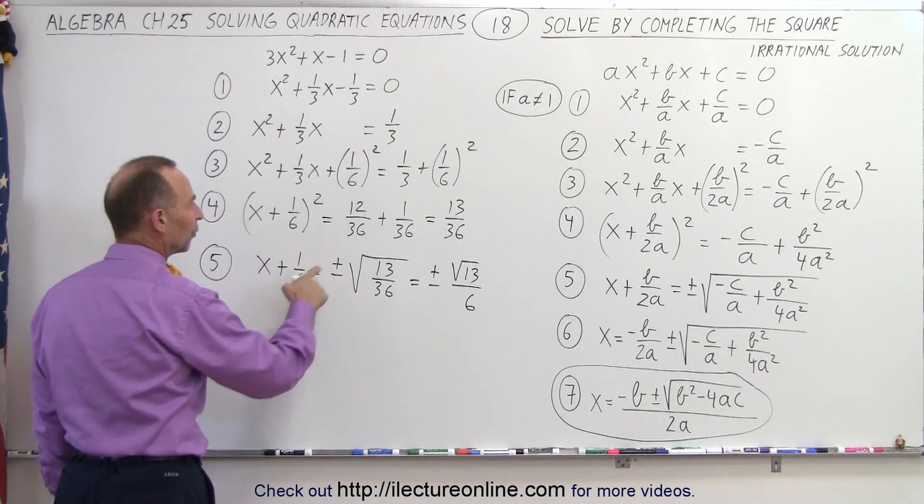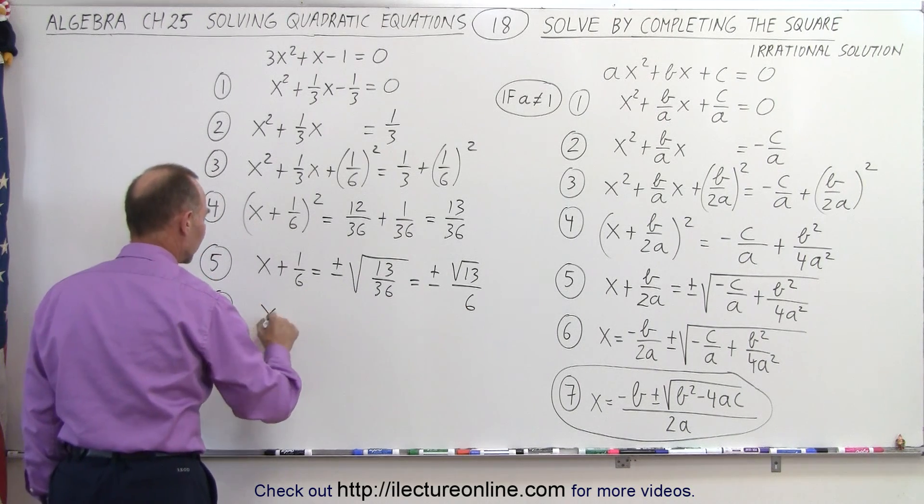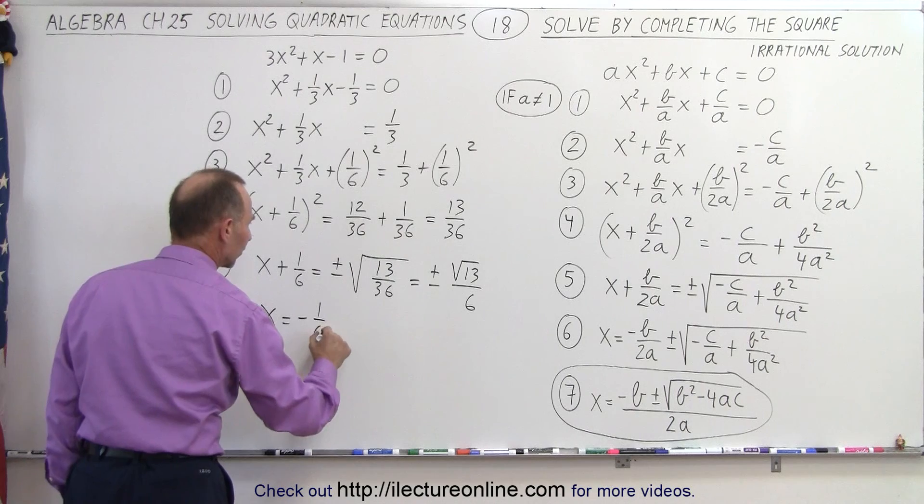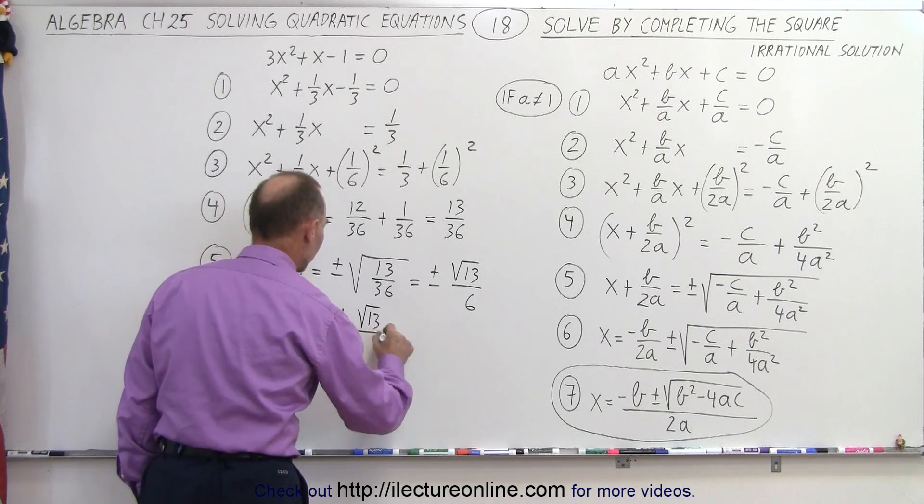Now we're going to move this constant over to the right side. That's step number 6. Step number 6, we get x is equal to minus 1 over 6, and then plus or minus the square root of 13 over 6.